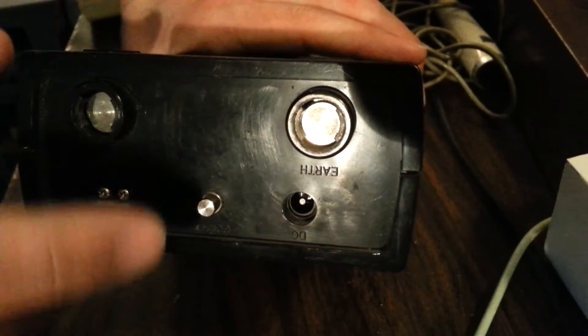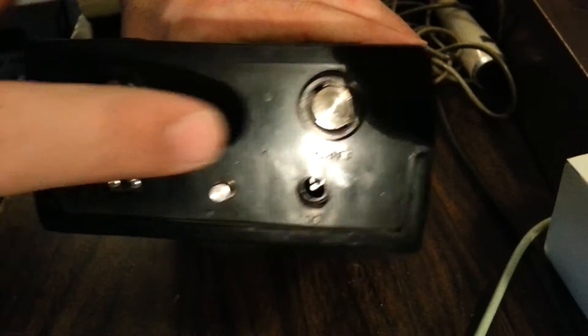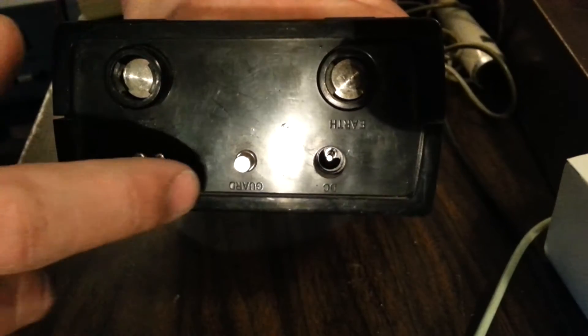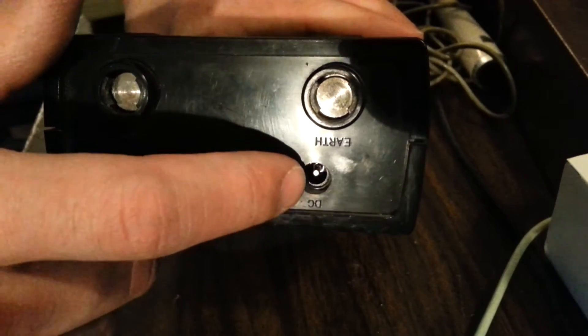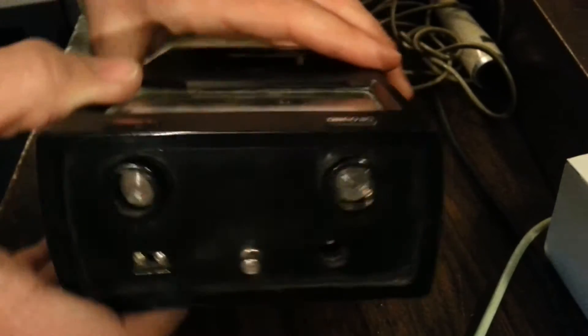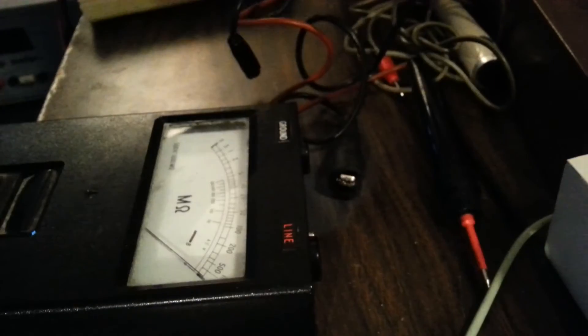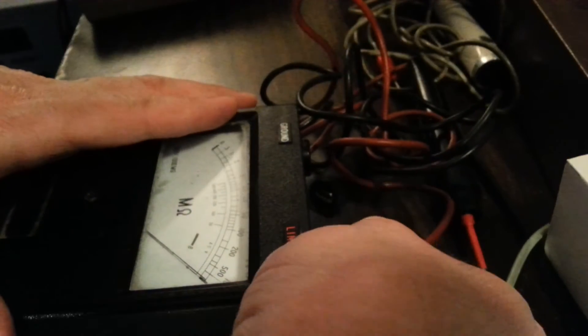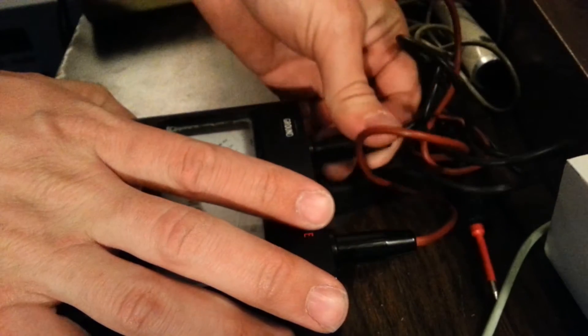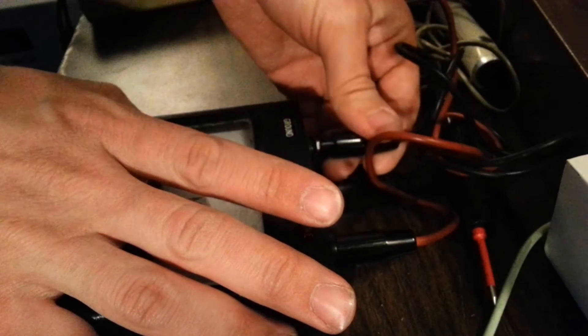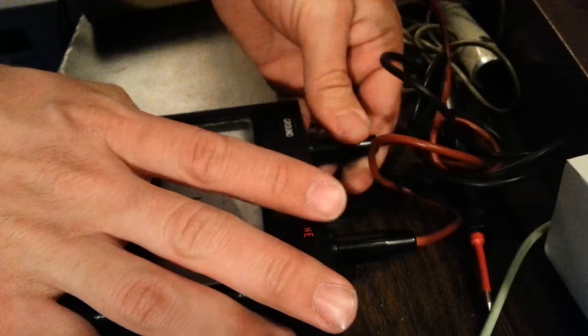Here's the back of the meter. There's a connection for earth, in line, battery check, something called guard, and a DC in for external power supply. So we're going to hook up our leads. There we go.